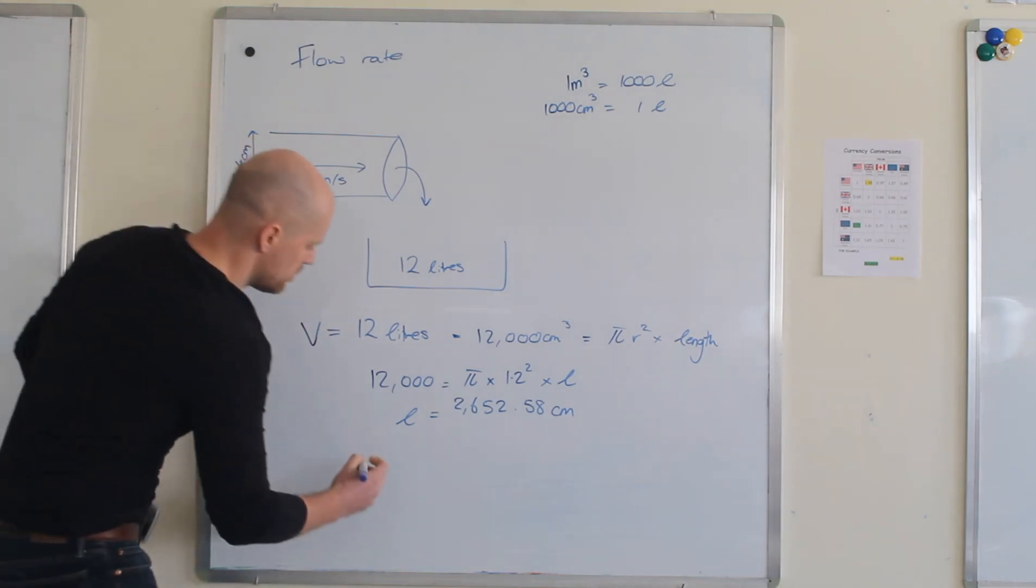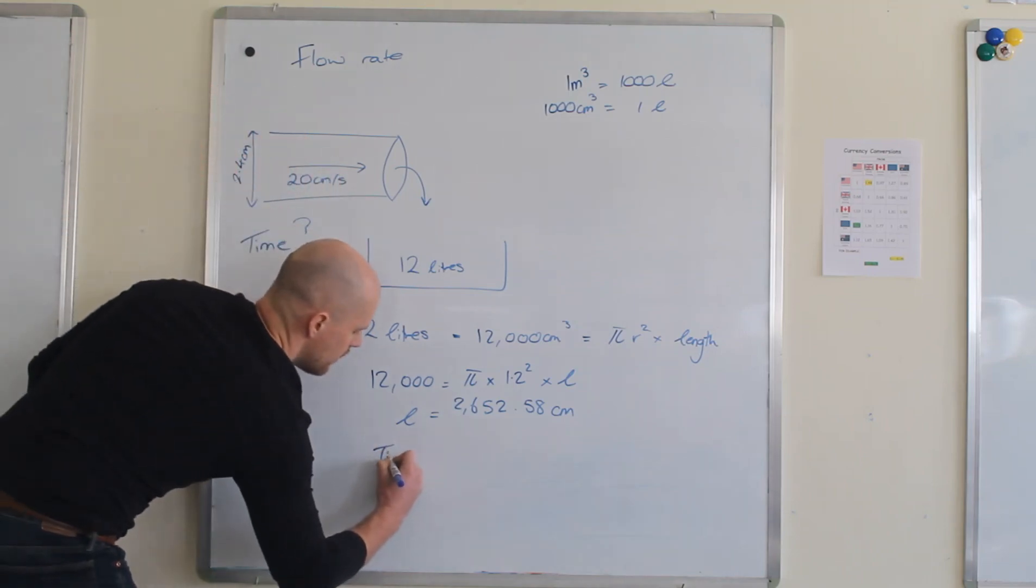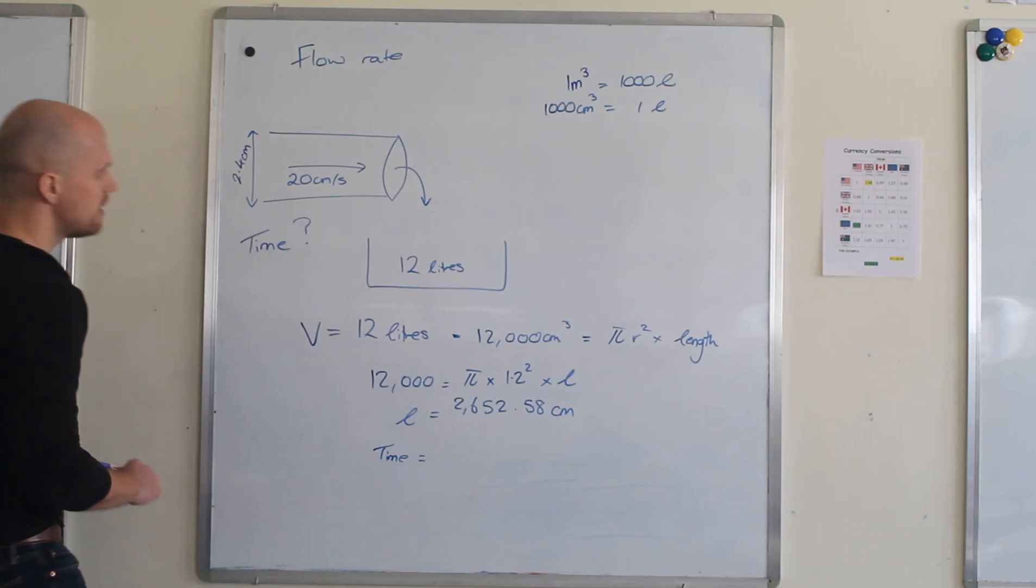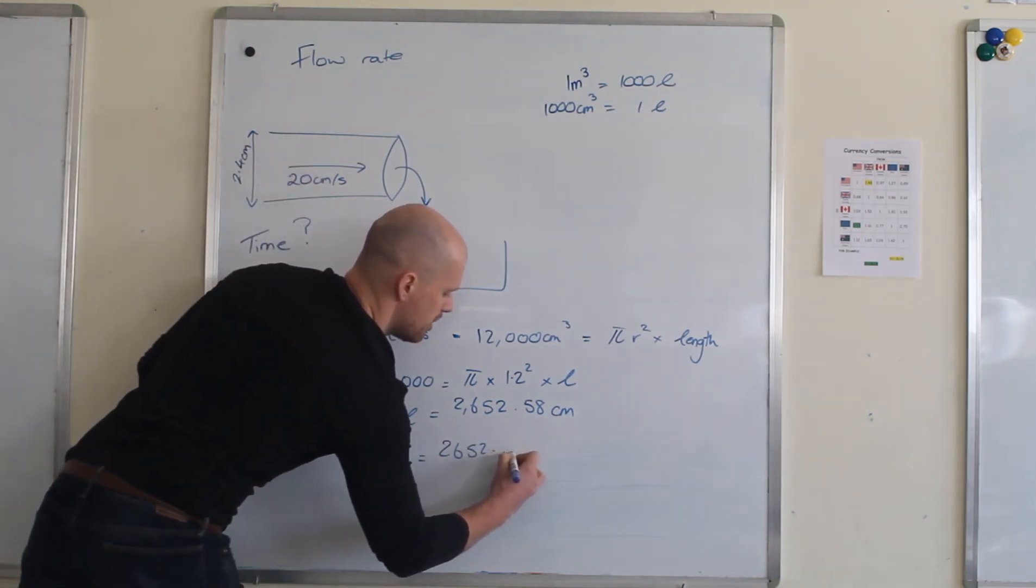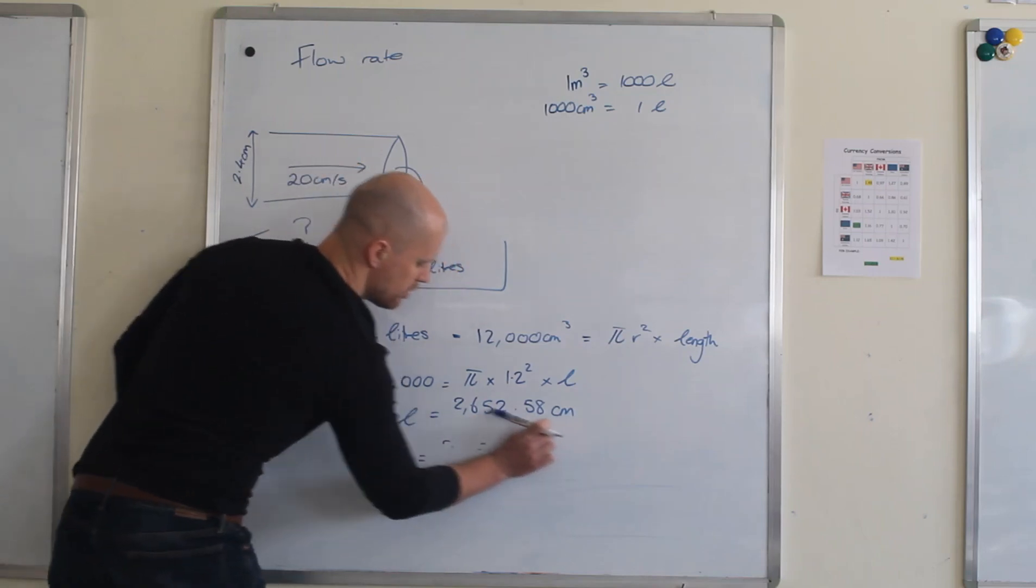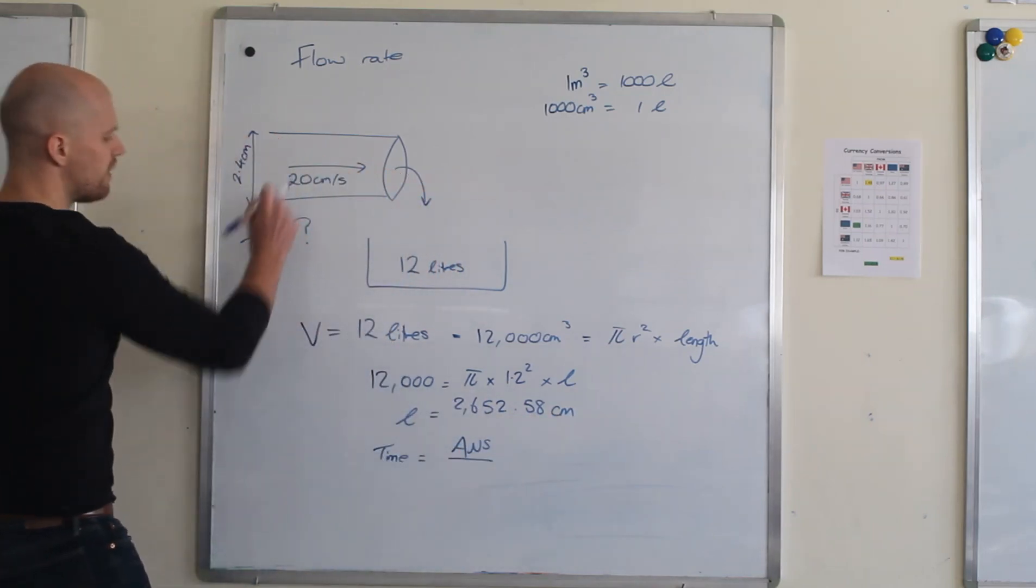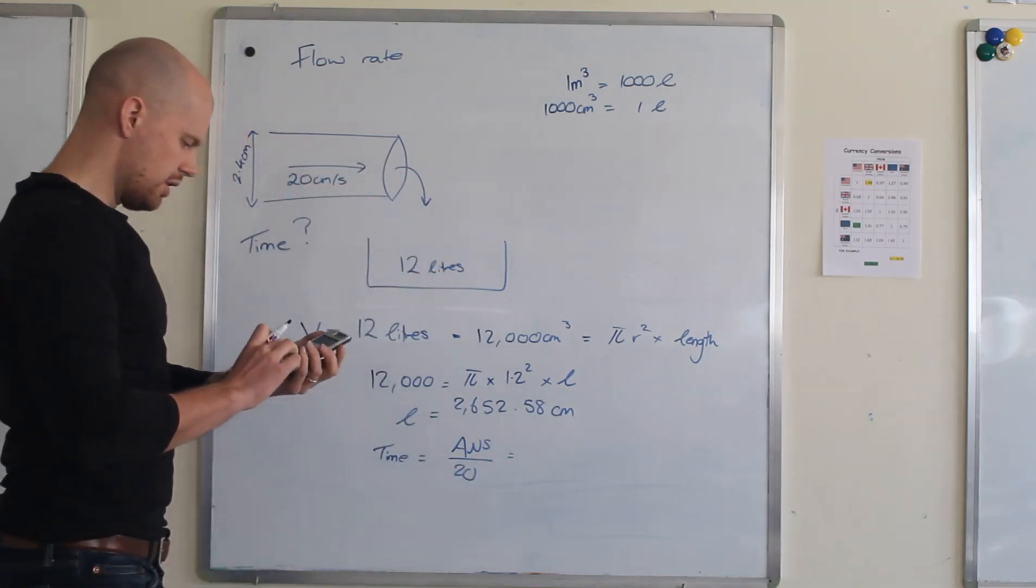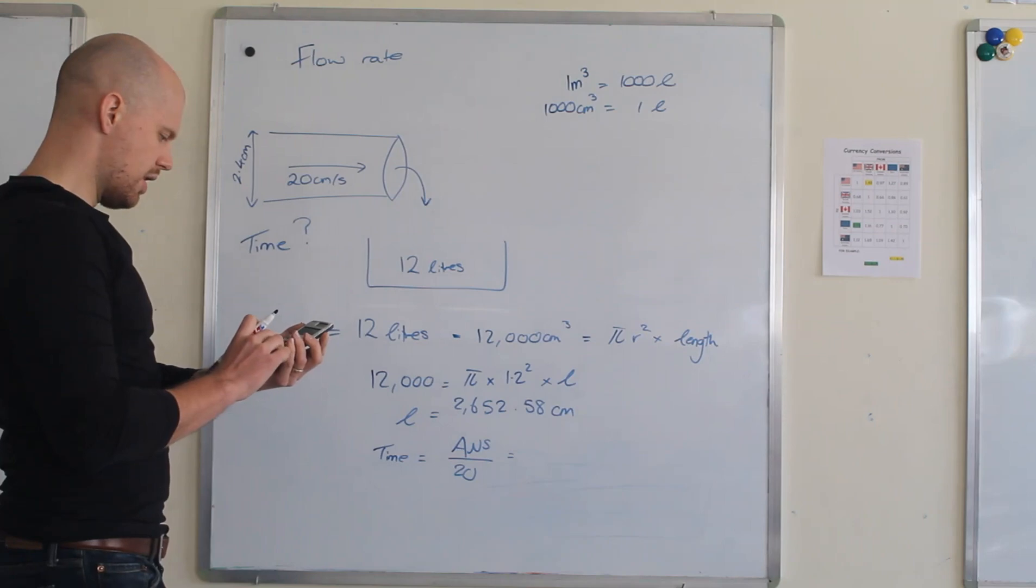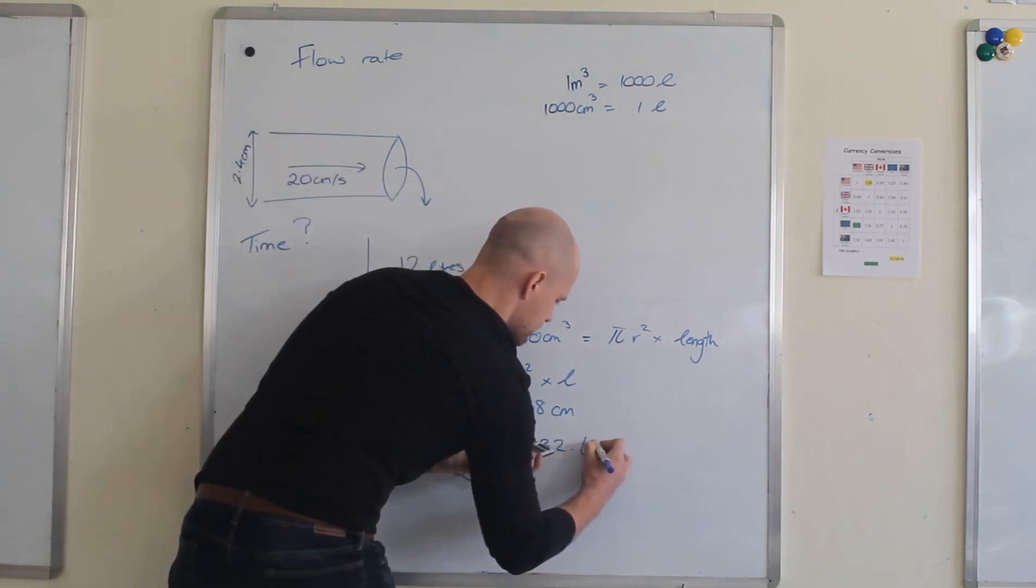So all I need to do is the time is distance over speed. So distance is 265.2 point blah blah blah, but actually we shouldn't do that, should we? We should use answer on your calculator and divide it by 20. So take your answer, divide it by 20, and I get 132.63 seconds.